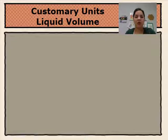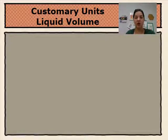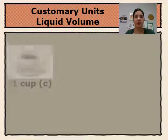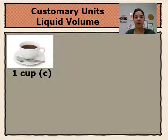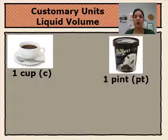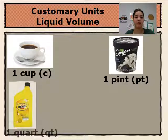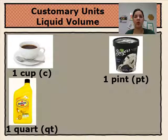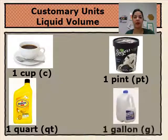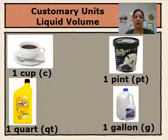We will begin by talking about the customary units of liquid volume. We can use one cup, abbreviated by the letter C, one pint, abbreviated with the letters PT, one quart, abbreviated with the letters QT, and one gallon, abbreviated by the letter G.